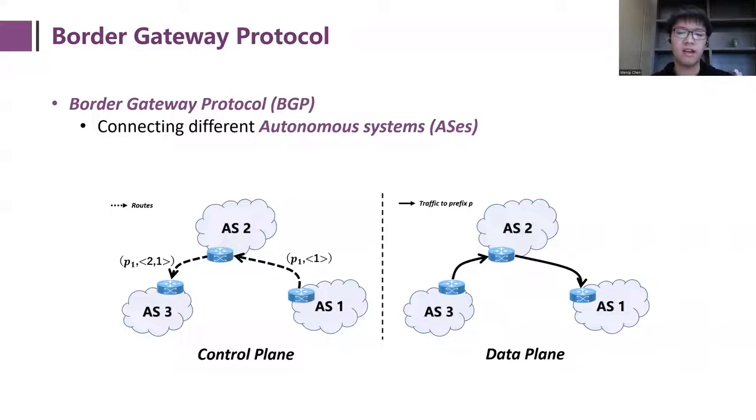With BGP, an AS can announce its routes to other ASes, and the ASes that receive routes will select the best route according to certain policies and further propagate it to other ASes. Finally, in the data plane, each AS will use the best route to forward traffic.